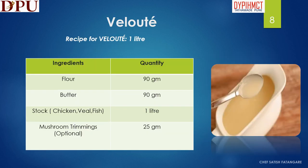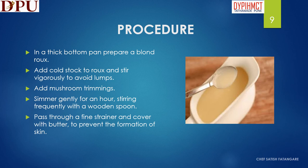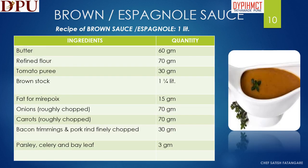In this slide we will learn about velouté sauce. The ingredients required to prepare 1 liter of velouté sauce are refined flour, butter, and stock of chicken, veal or fish. To prepare the velouté sauce: in a thick bottom pan prepare a blonde roux. Add cold stock to roux and stir vigorously to avoid lumps. Add mushroom trimmings. Simmer gently for an hour, stirring frequently with a wooden spoon. Pass through a fine strainer and cover with butter to prevent the formation of skin.